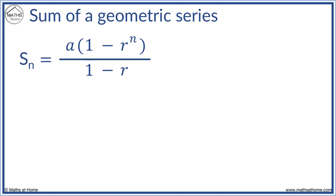r is the ratio between each term. For r values between minus 1 and 1, as n tends towards infinity, then r to the n tends towards 0.